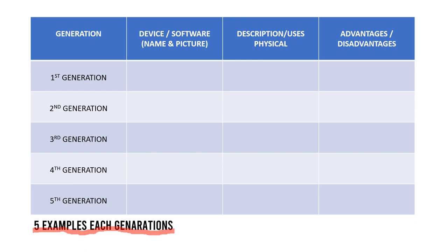Then include the advantages — what were the advantages of that specific software or device during that period of time? And also include the disadvantages. Continue this format for the second, third, fourth, and fifth generations.